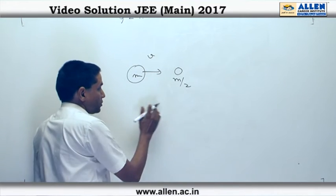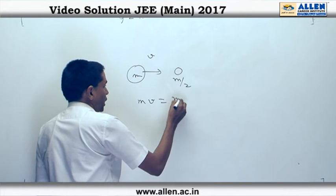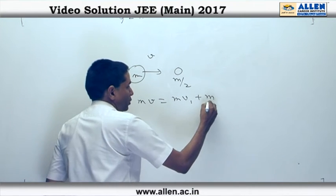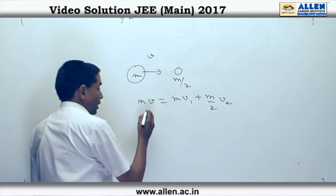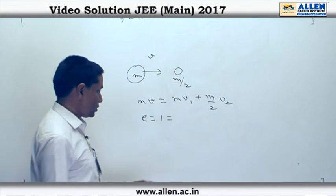We can apply momentum conservation principle: mv = m·v₁ + (m/2)·v₂. The coefficient of restitution equals 1 because it is an elastic collision.